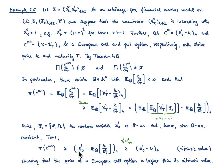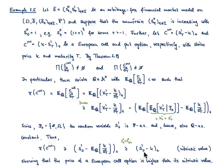The price equals the initial value of the risky security minus the expected value of the strike price K divided by the numeraire at maturity. Now taking advantage of the fact that the numeraire is an increasing process, we get a lower bound by replacing S⁰(T) by its initial value S⁰(0) = 1, and in that way we obtain as a lower bound the positive part of the initial value of S¹ minus the strike price K. This value I would like to denote as the intrinsic value. This shows clearly that the price of a European call option is bounded from below by the intrinsic value.